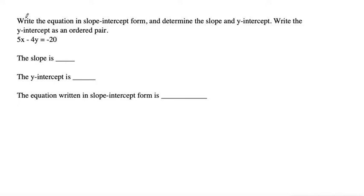So this problem says write the equation in slope-intercept form and determine the slope and y-intercept. Write the y-intercept as an ordered pair and the equation is 5x minus 4y equals negative 20.